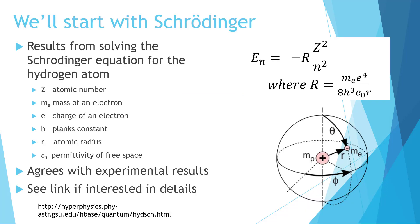Think back to the process for deriving the energy levels for the particle in the box—you could take a moment to review that video if you'd like. The same process can be used for a hydrogen atom, though it's significantly more complicated, and once again requires differential equations. The process is well beyond the scope of this class, but if you take physical chemistry, you'll do this. A link is included if you're interested in learning more, but it's not within the scope of the class.